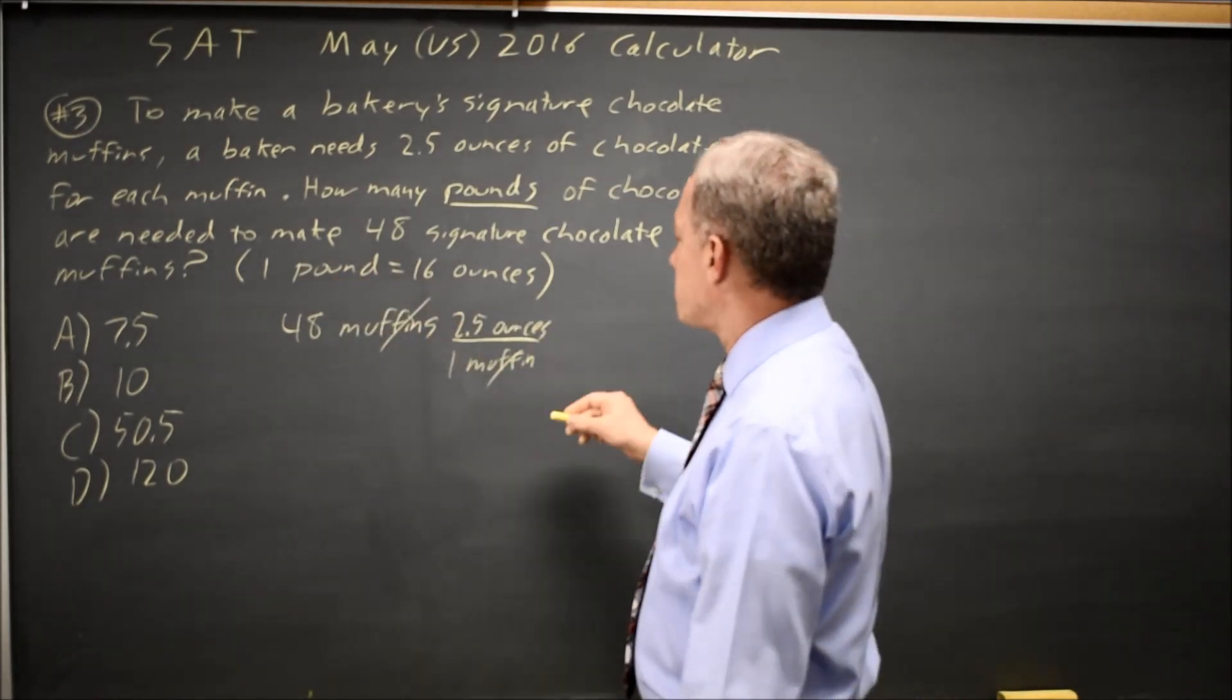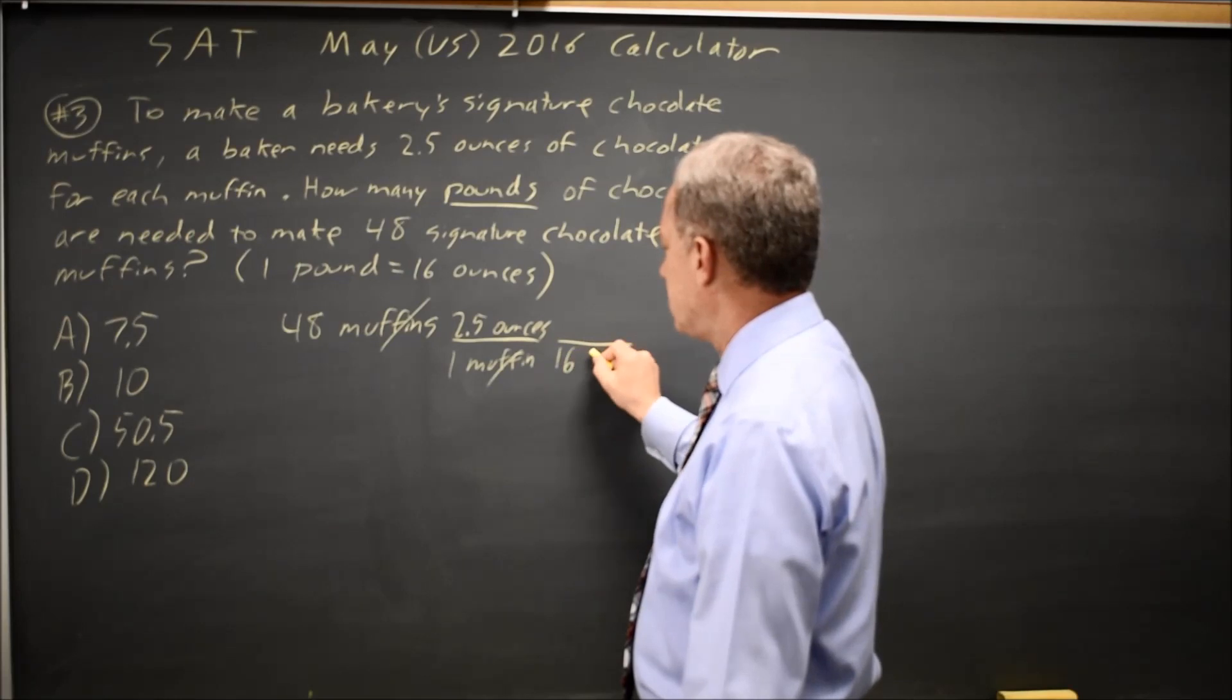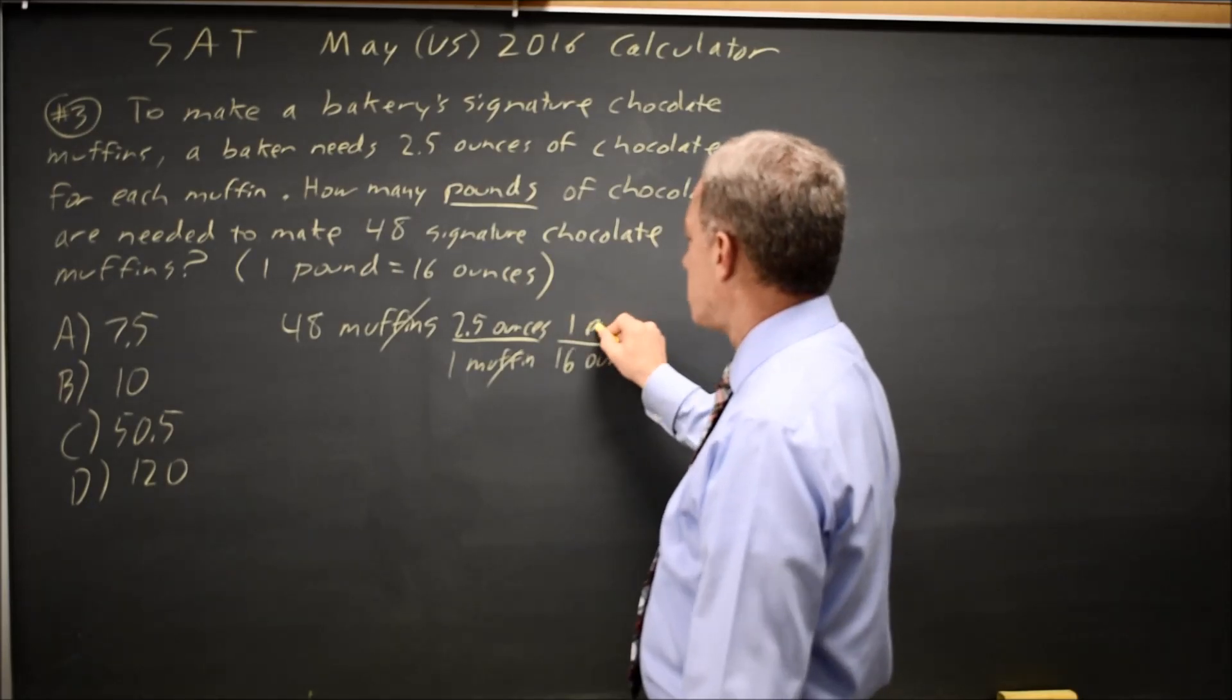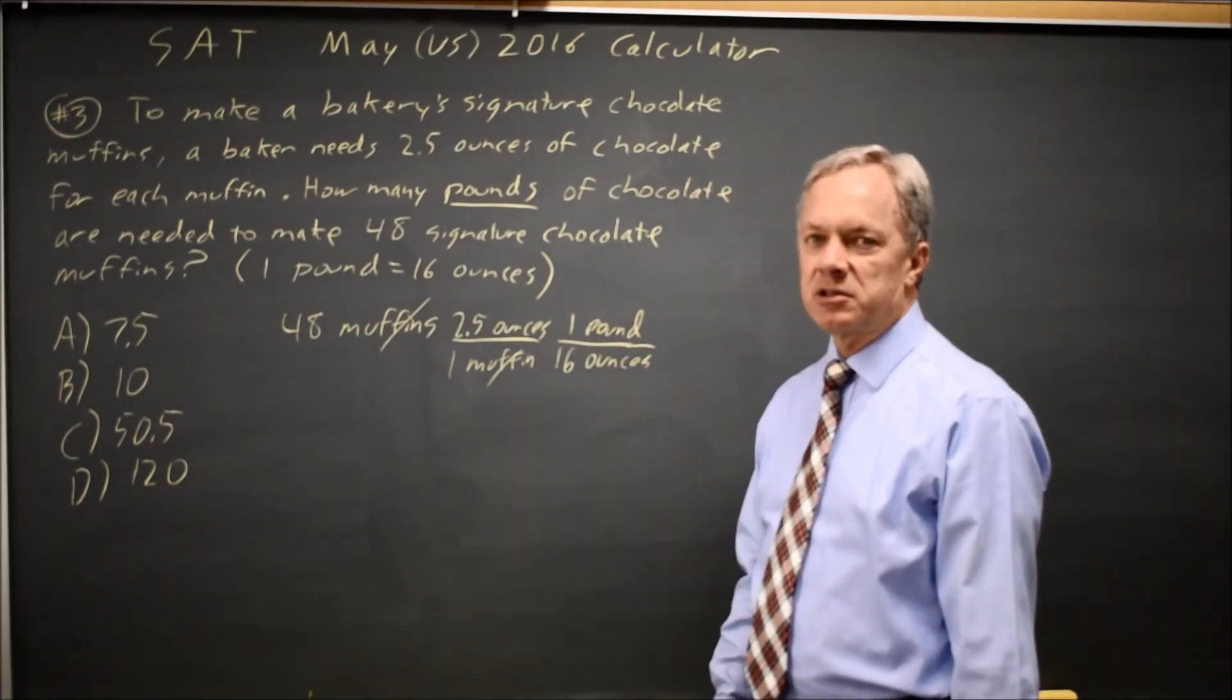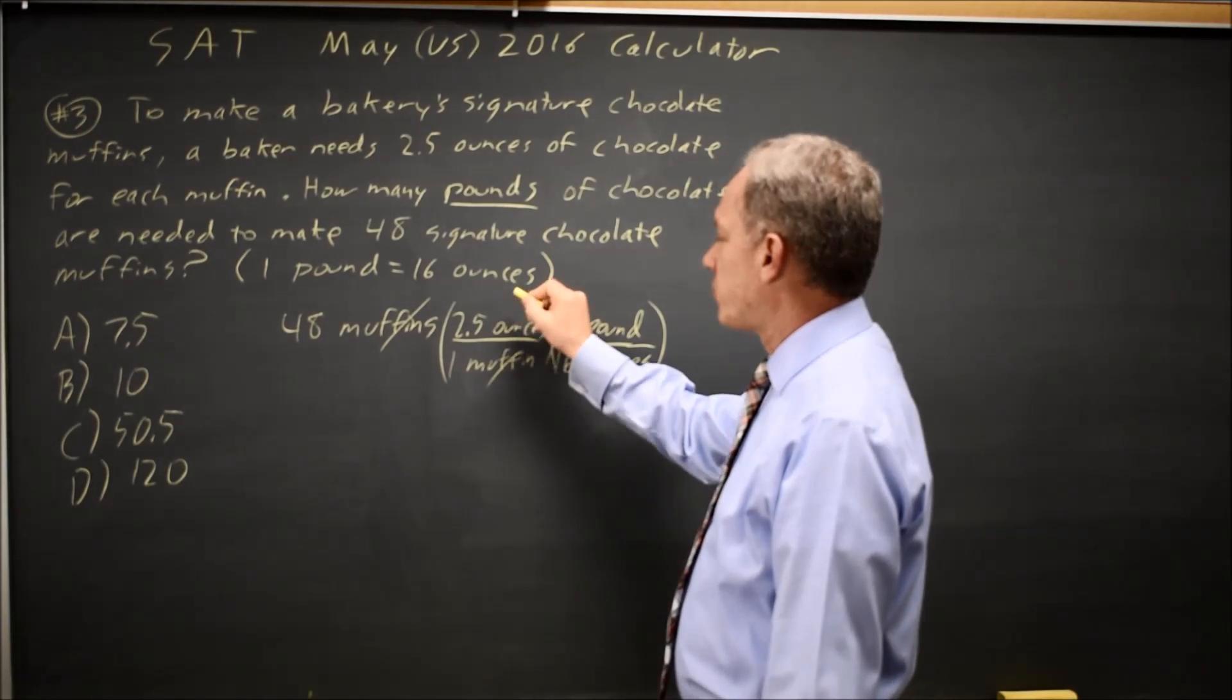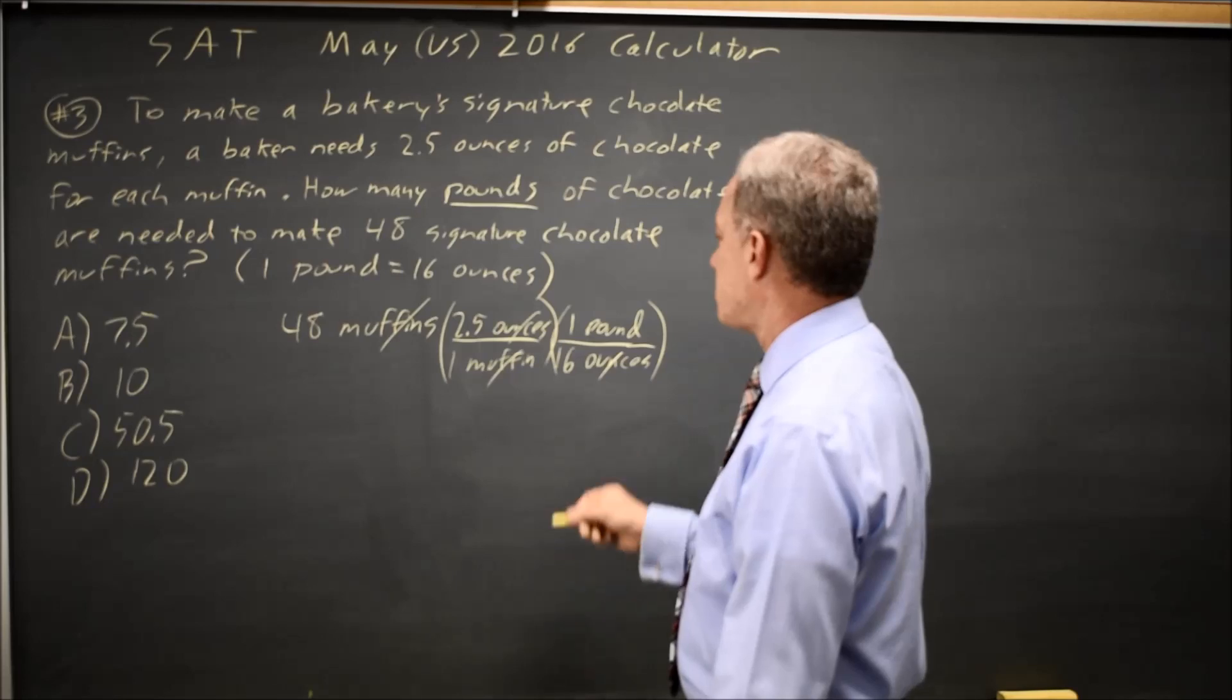I'm also told 1 pound equals 16 ounces. I want to cancel out my ounces. So 16 ounces goes in the denominator to cancel ounces in the numerator. And 1 pound goes in the numerator because 1 pound equals 16 ounces. So if I multiply by 1 pound over 16 ounces, I multiply by 1. When I multiply by 2.5 ounces over 1 muffin, that was also 1. And then ounces cancel.